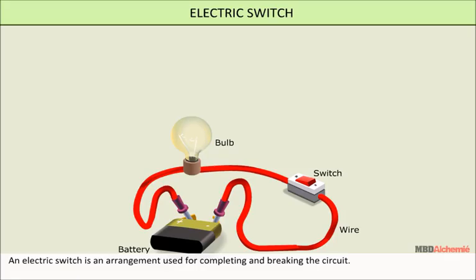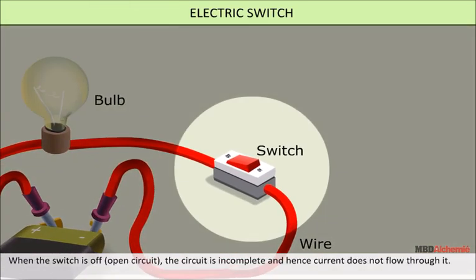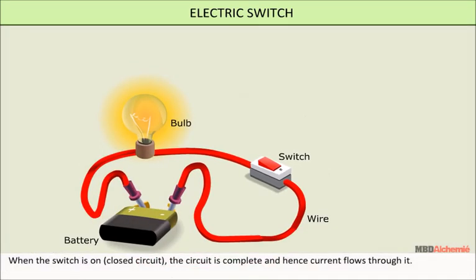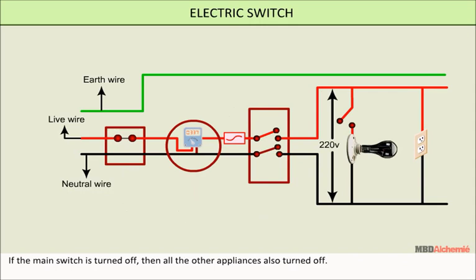An electric switch is an arrangement used for completing and breaking the circuit. When the switch is in the open position, the circuit is incomplete and hence current does not flow through it. When the switch is in the closed position, the circuit is complete and current flows through it. In our house, there is a main switch to which all the connections are made. If the main switch is turned off, then all the other appliances also get turned off.